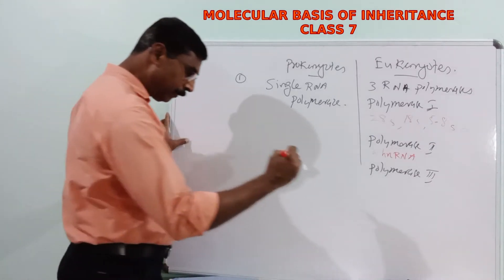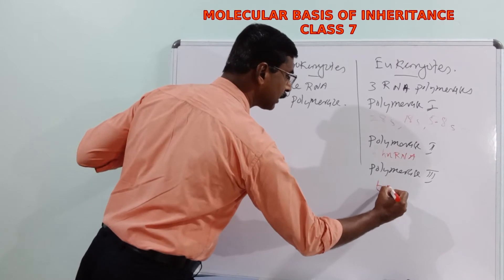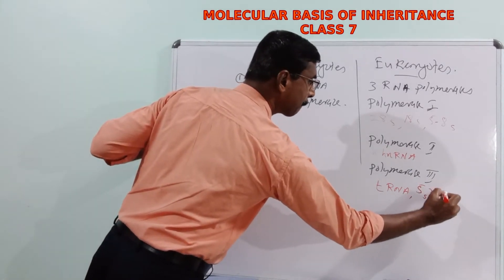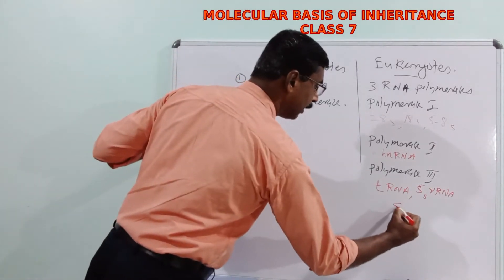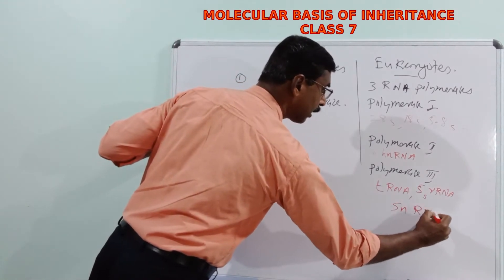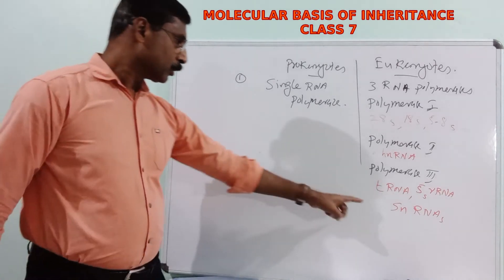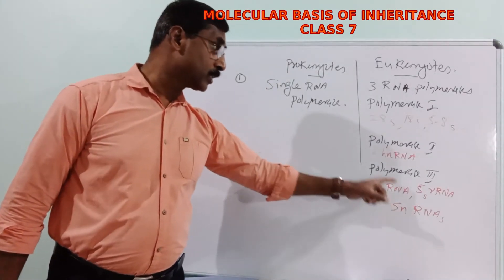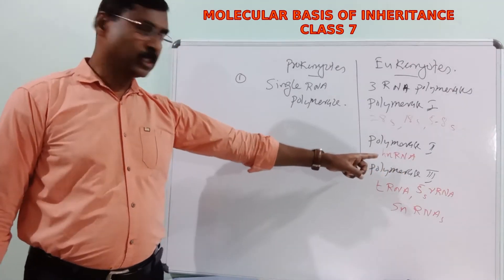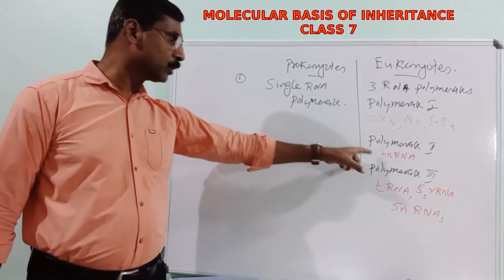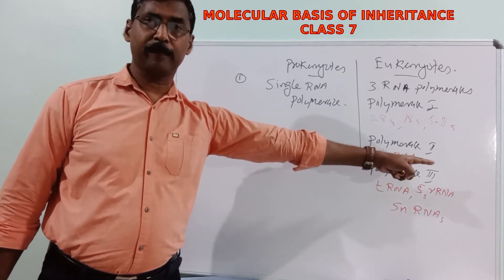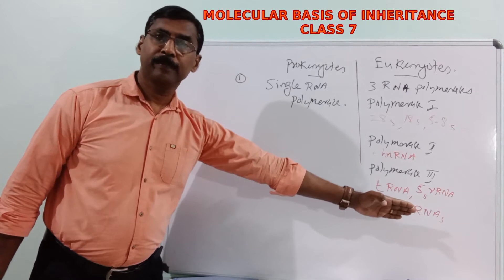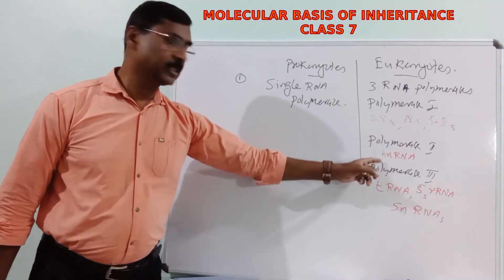Polymerase 3 transcribes transfer RNA, 5S rRNA, and snRNAs — small nuclear RNAs. Small nuclear RNAs are very much required for the processing of the heterogeneous nuclear RNA. The first formed messenger RNA is heterogeneous nuclear RNA, and it must undergo certain processing to become functional messenger RNA; snRNAs help in that processing of HnRNA.